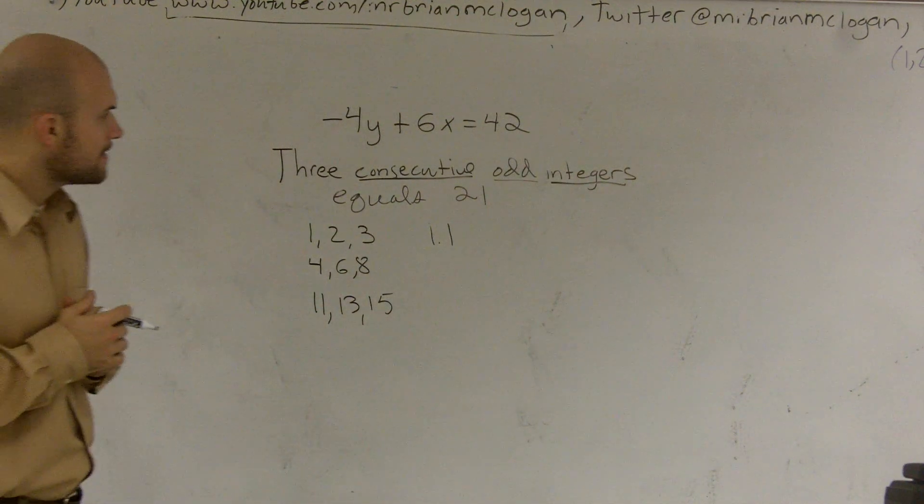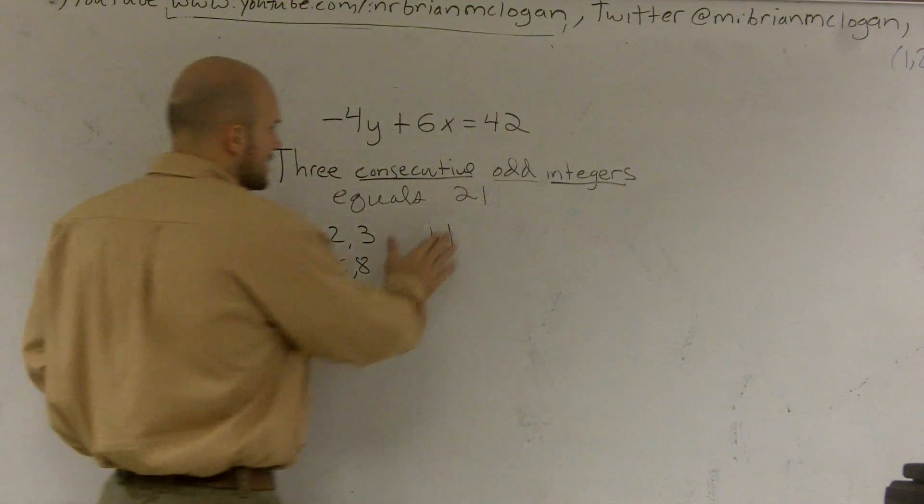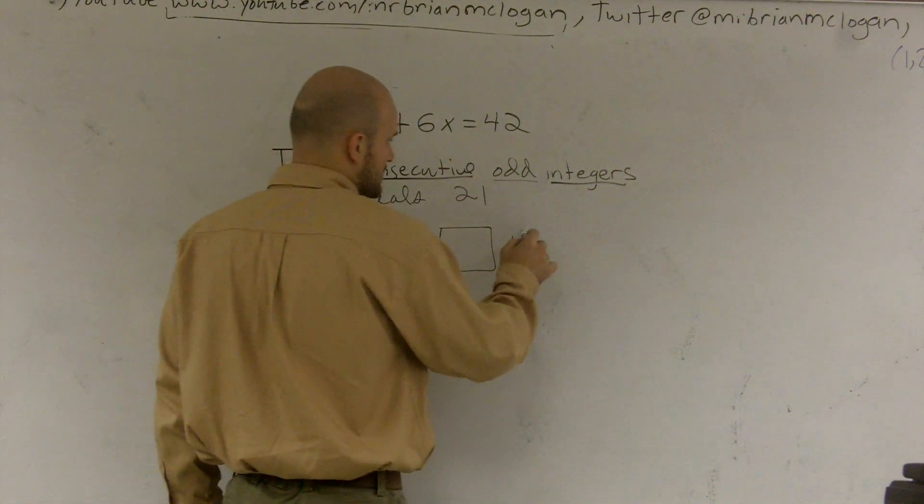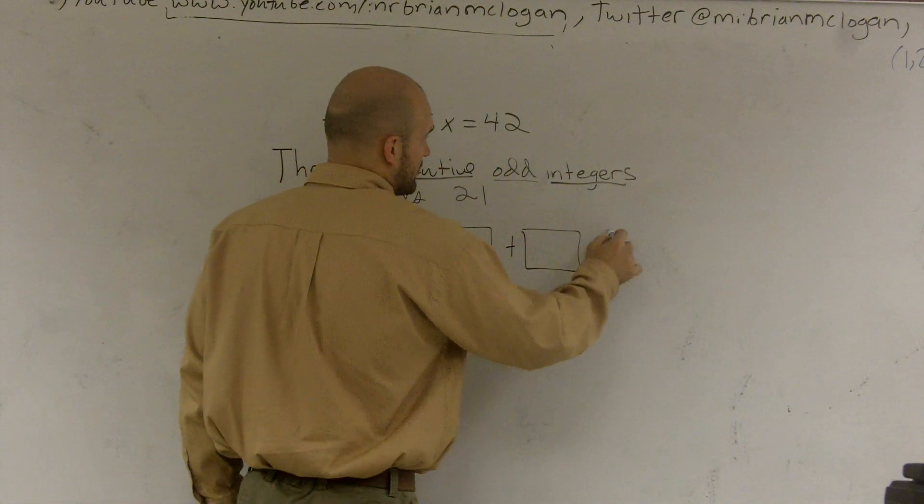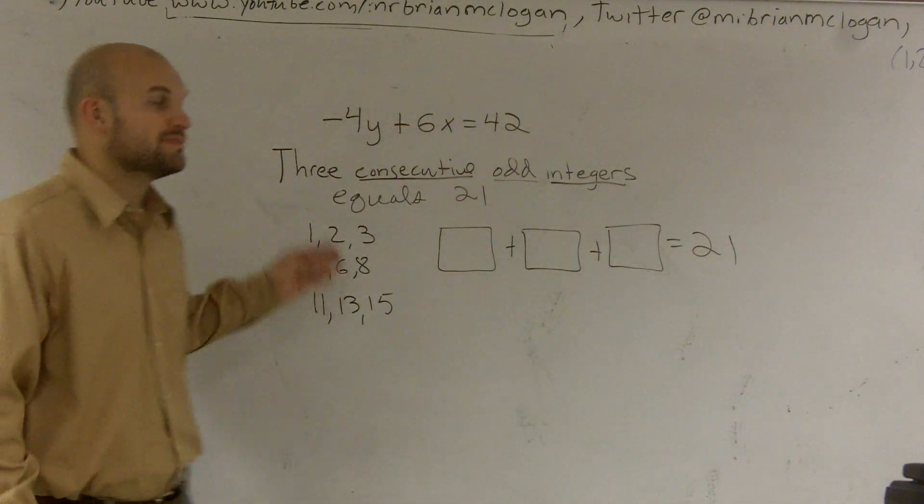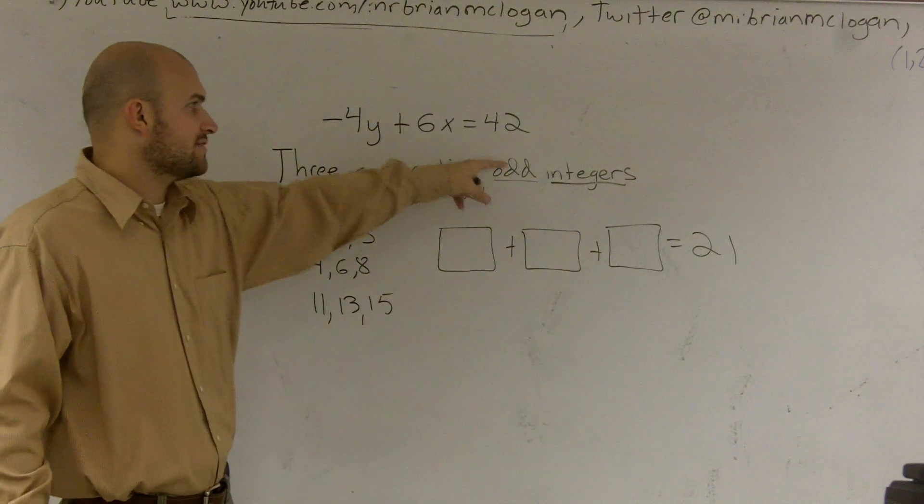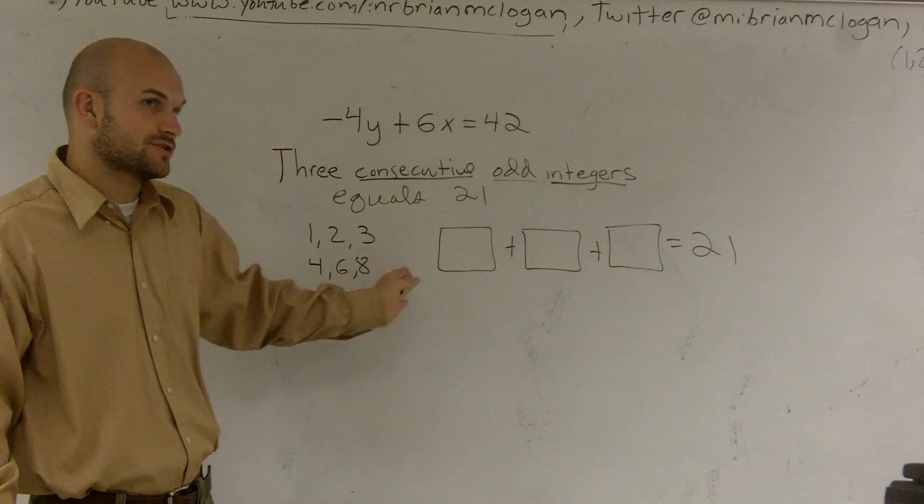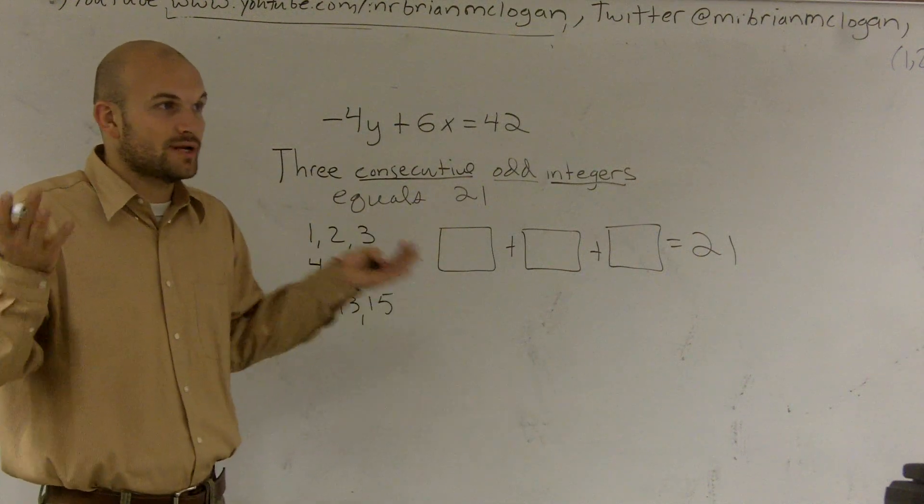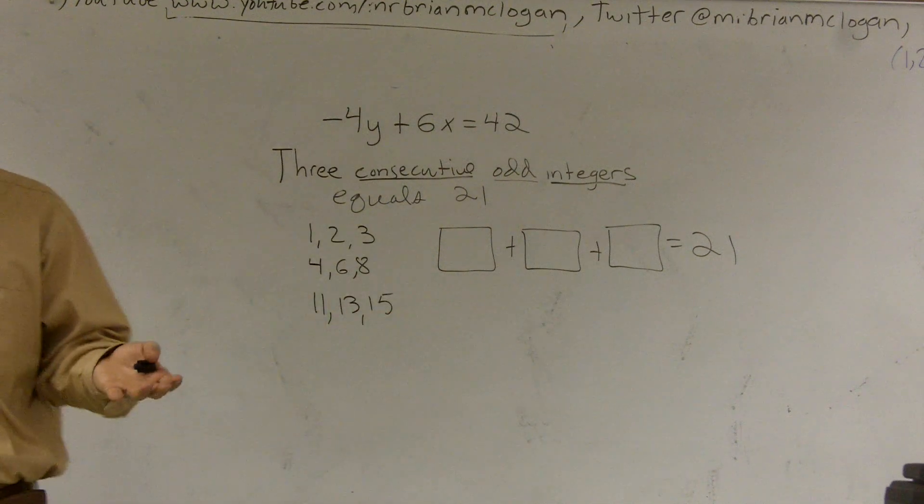We know what integers are and we have numbers. So there's three of them that add up to 21. So I'm going to say this first number plus another number plus another number equals 21. Remember, these numbers have to be right next to each other, the next odd number. Do you know what to start with? No. So when we don't know what to start with, we give that a variable, an X.